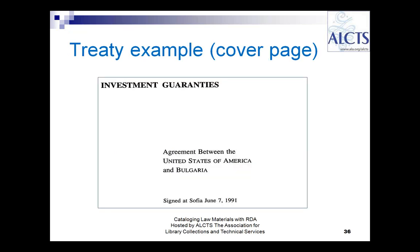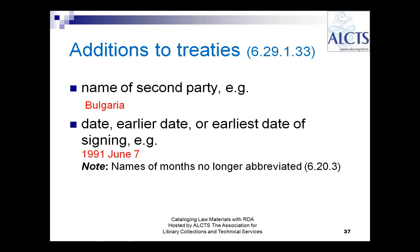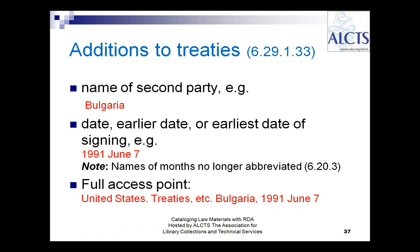Here's an example of a treaty between the United States and Bulgaria. When you create the authorized access point, you make certain additions including the name of the second party — in this case Bulgaria — and the date or earliest date of signing. Your full access point starts with the first-named party, which in this case is the United States — not going in alphabetical order — then adding 'treaties, etc.' as your preferred title, the second party, and the dates. Note that names of months are no longer abbreviated in RDA.